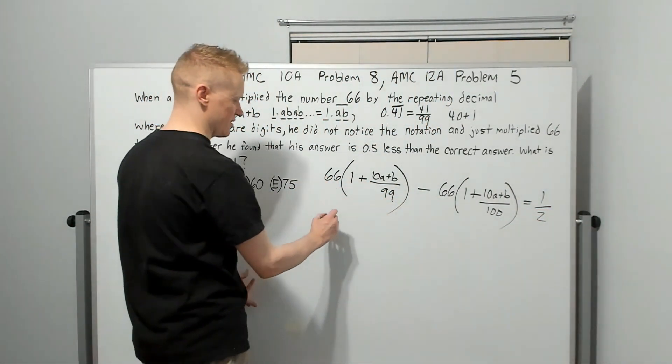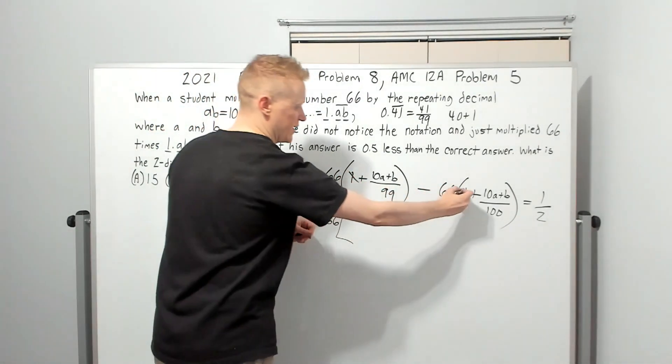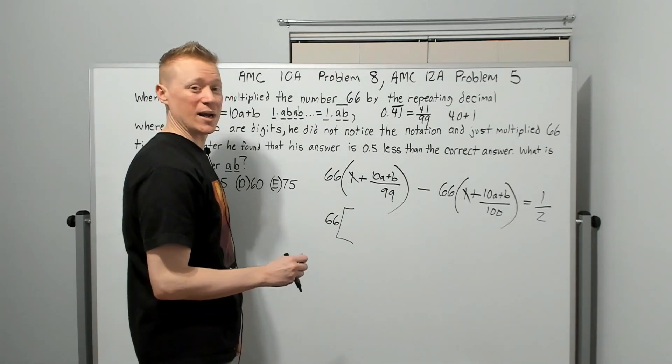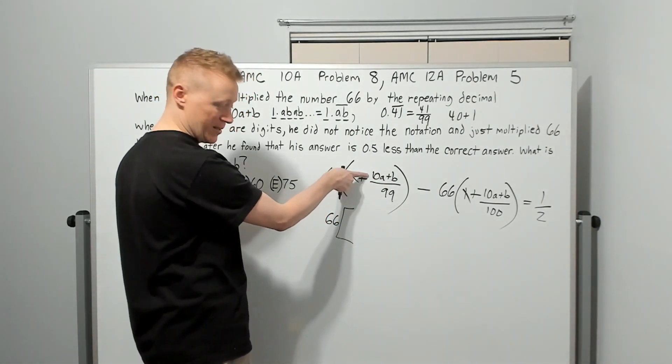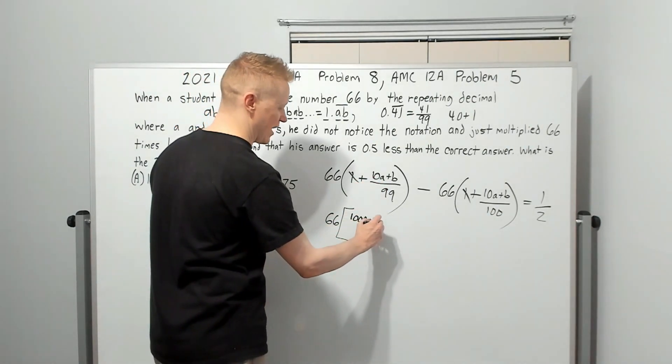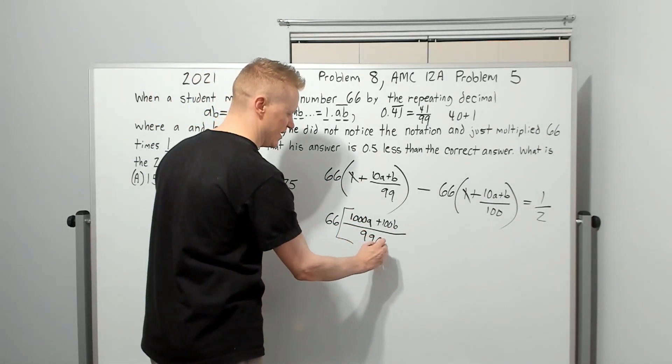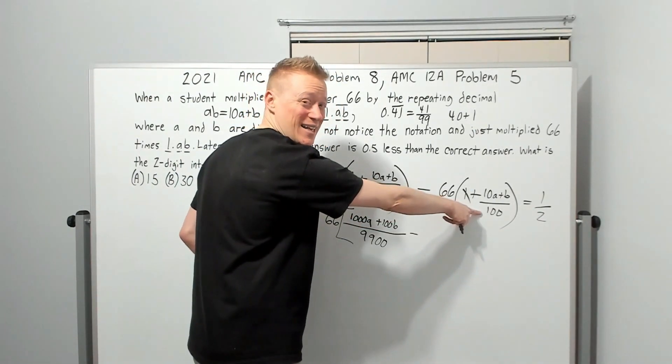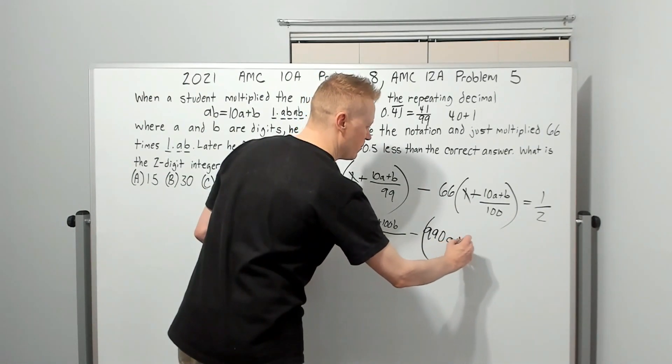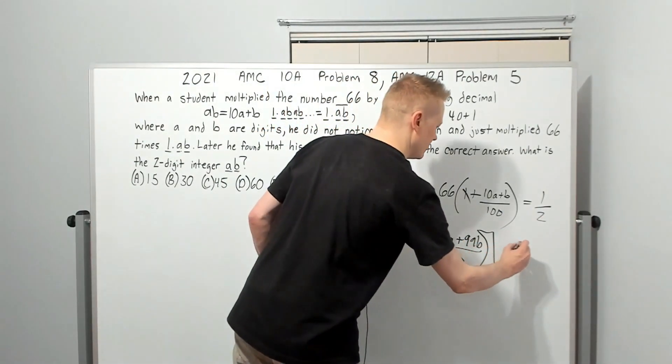My first thought, let's factor out this 66. So I'm going to write 66 here, and imagine moving the minus onto that 1. The 1s are going to cancel. Then I'm going to have this expression minus that expression, and they don't have a common denominator. So I'm going to make one right now, 9900. I'm going to multiply this one by 100 over 100. So 10A times 100 is 1000A plus 100B over 9900. And we're going to do this one times 99 over 99. So you're going to get 990A plus 99B over 9900.